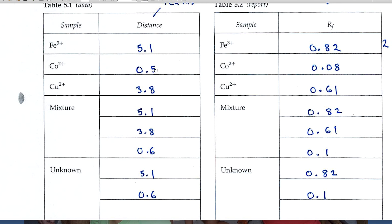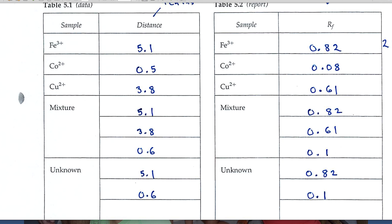For example, the cobalt ion I put down as 0.5. When I calculate the RF value, it's 0.08, only one significant figure when I express it to the hundredth. But in general, the grader will look to see that you've got two significant figures over there.